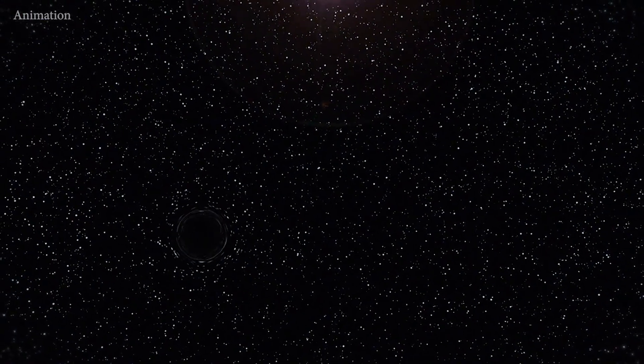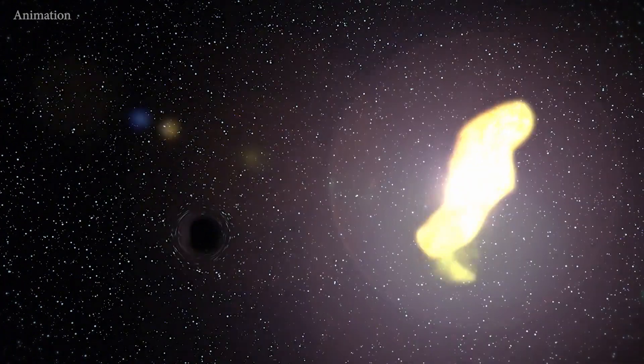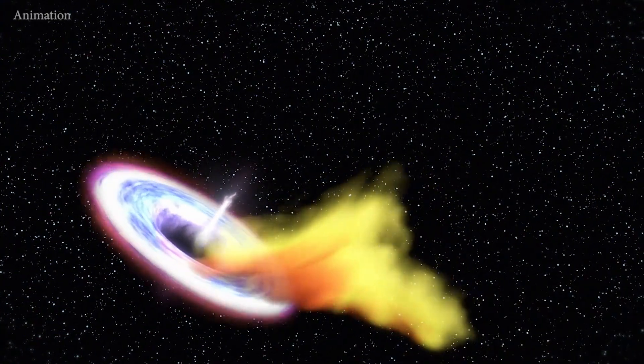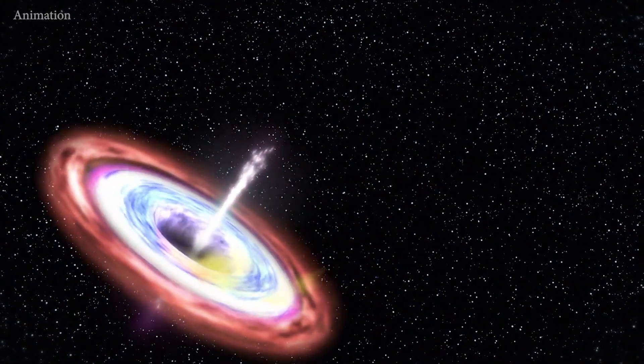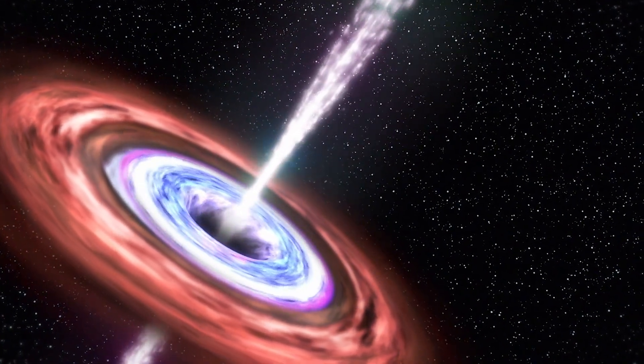Hubble examined the same location in ultraviolet and optical light, revealing a dense cluster of stars surrounding the black hole. These stars are packed so tightly that they're only a few light months apart, about 500 billion miles, providing a convenient potential food source for the black hole.